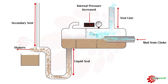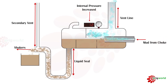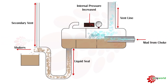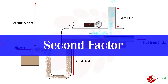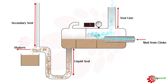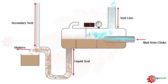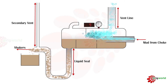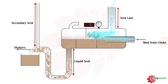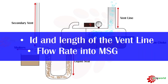If the ID of the vent line is reduced, or if the length of the vent line is increased, the pressure on the gauge will increase. This means that if the vent line ID is reduced and height is increased, the build-up pressure will increase. Second factor: if the flow coming out of the wellbore into the MGS is increased, the percentage of gas will be more, creating more back pressure and build-up pressure in the MGS. So gauge pressure depends on two factors: the ID and length of the vent line, and the flow rate into the MGS.